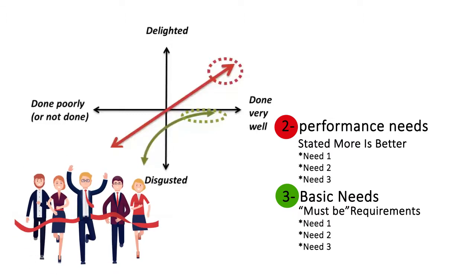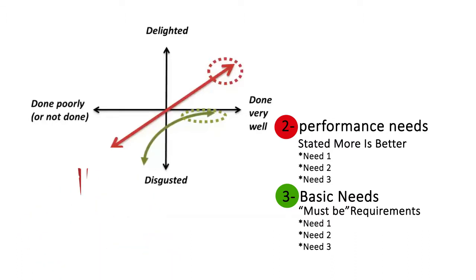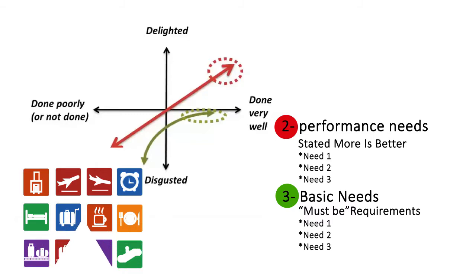Again to use the airline example, this would be seat comfort, selection of movies, price, food and beverage, and service in flight. These are all performance needs.